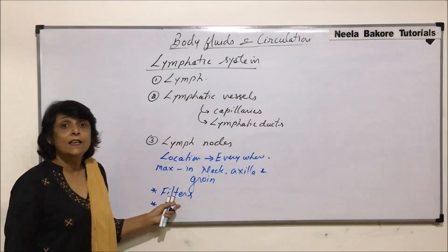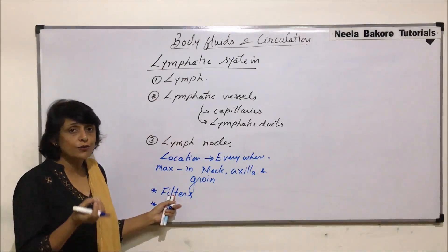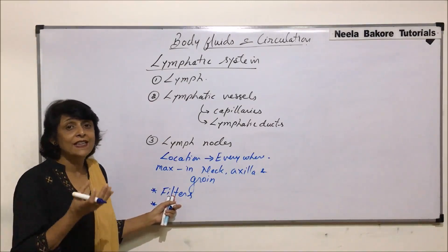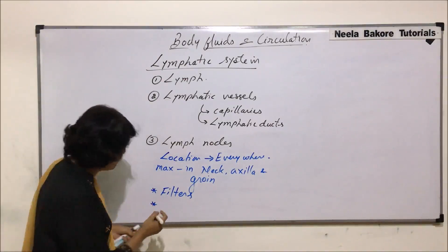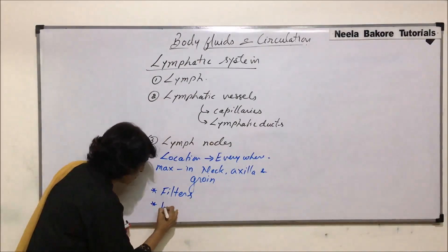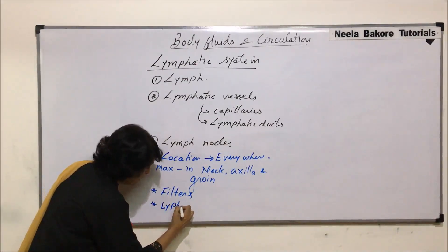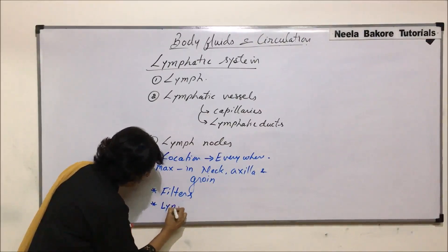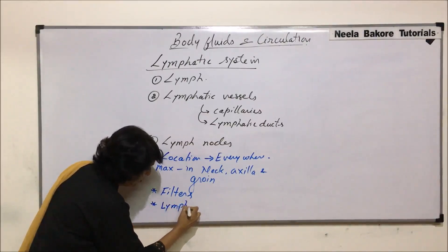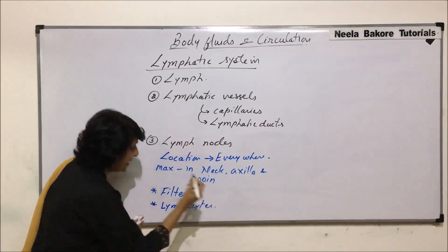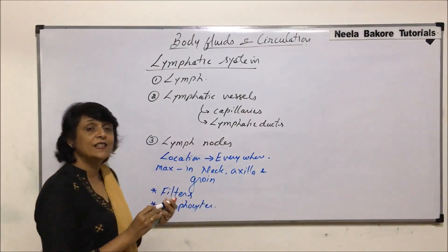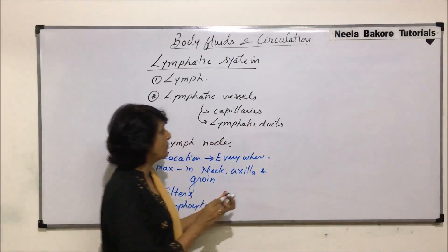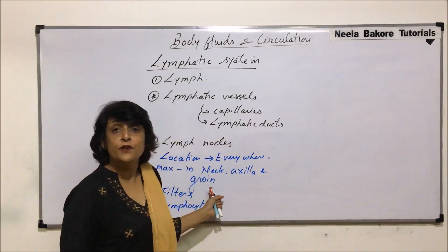Second, lymph nodes are also the sites where lymphocytes are going to be produced. So they are sites for the production of lymphocytes. Now let us first see the structure, and then we will take a few more things about each lymph node.